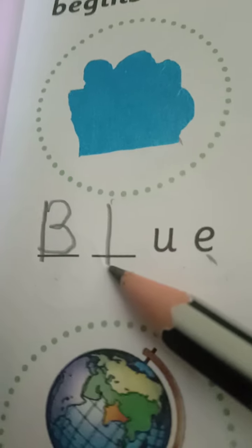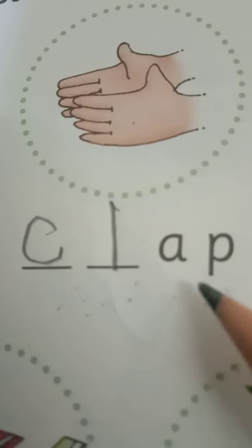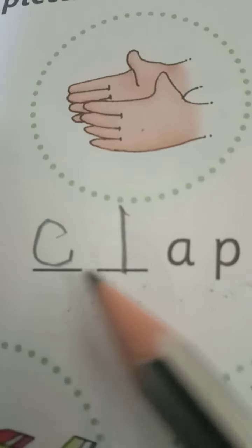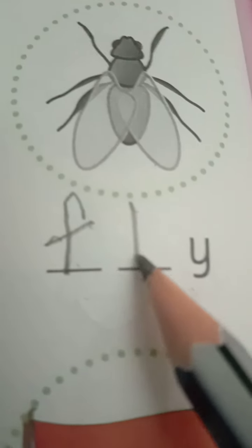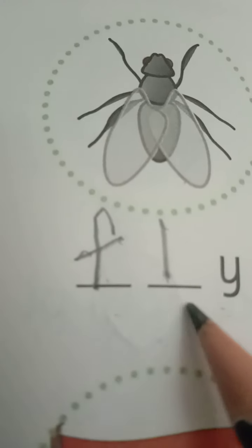You can see BLUE in the picture, and the spelling of BLUE begins with the blend BL, so we have to fill in the blend BL. The next picture is of CLAP — C-L-A-P — fill it with CL. Then FLY and FLOWER, filled with FL.